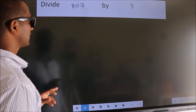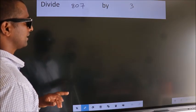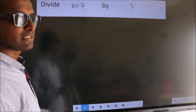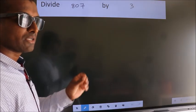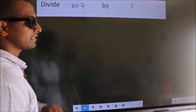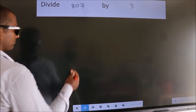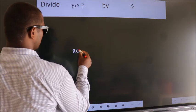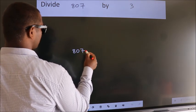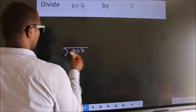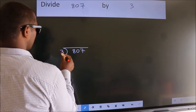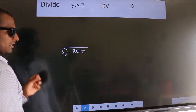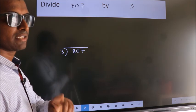Divide 807 by 3. To do this division, we should frame it in this way: 807 here, 3 here. This is your step 1.